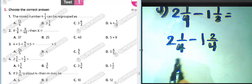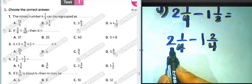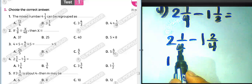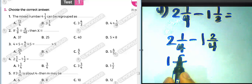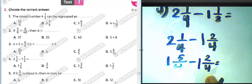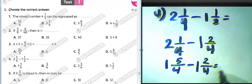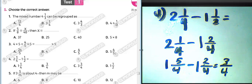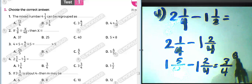We pull one from two, so it becomes one. That one becomes four over four, plus one over four equals five over four. Then we subtract one and two over four. One minus one equals zero, and five over four minus two over four equals three over four. The result for question number four is three over four — choose letter B.